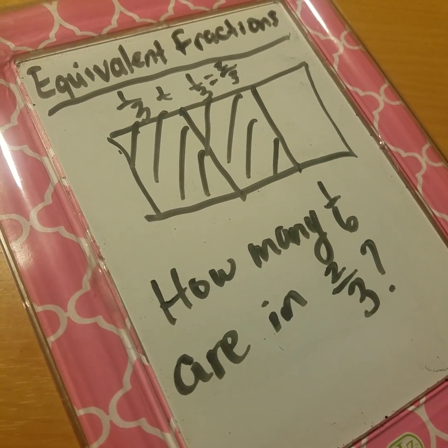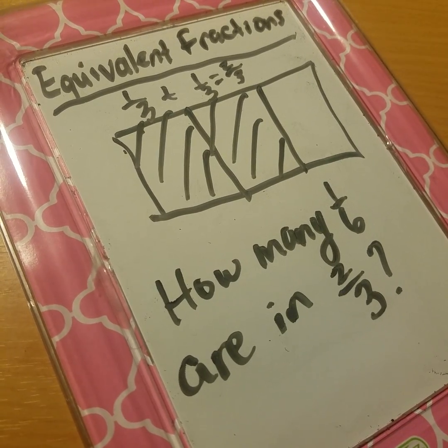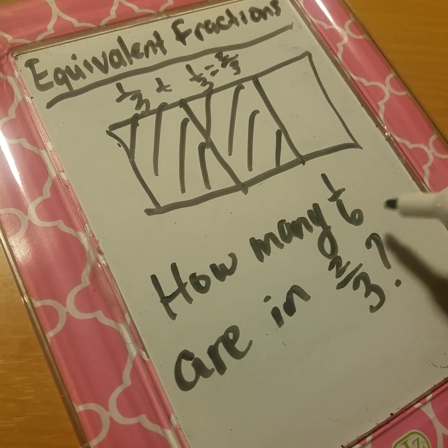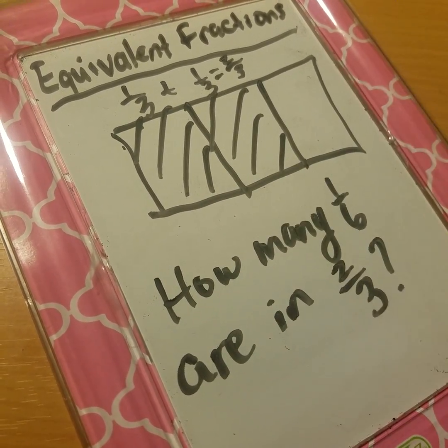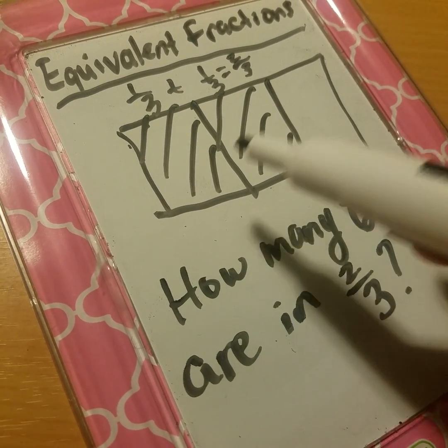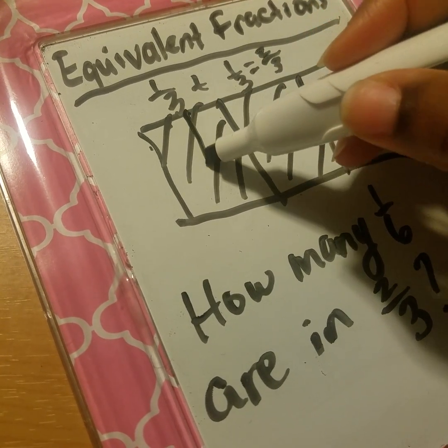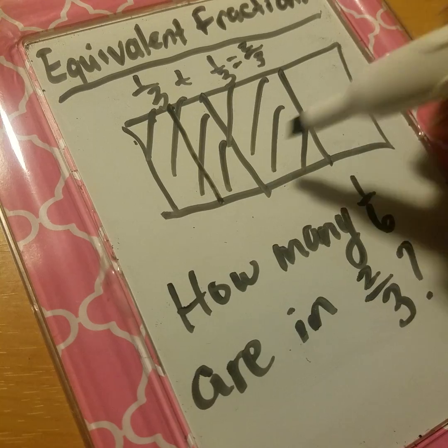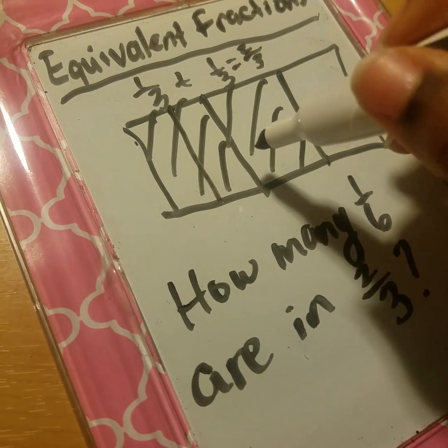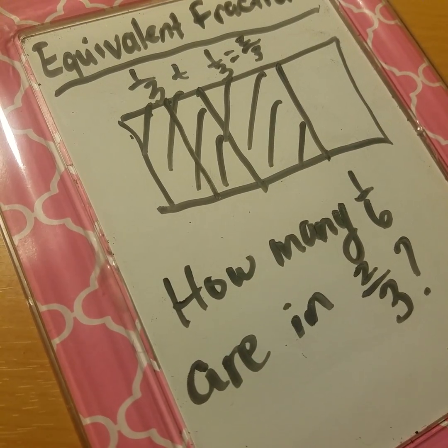Whenever you're dealing with fractions, you're always dealing with pieces of a whole. The denominator always represents how many pieces you should have. At the moment we have three pieces, each piece is considered a third. If I cut this third in half, then I need to cut all the rest in half to get six pieces, one-sixth pieces.